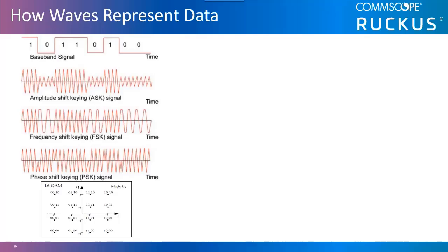Modulation in digital communication transmits binary data bits over analog waveforms. It is the process of varying one or more properties of a high frequency periodic waveform called the carrier signal with a modulating signal which typically contains information to be transmitted. Amplitude, frequency, and phase are the three basic elements of a waveform that can be varied.